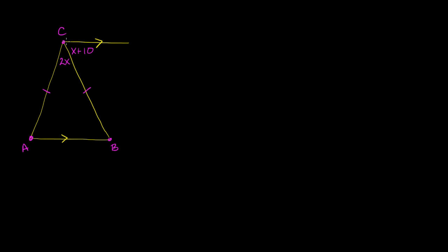They also tell us that this line up here — let me put another label there just for fun. You could even call this a ray because it's starting at C. That line or ray CD is parallel to segment AB over here. They give us these two adjacent angles in terms of x, and what I want to do is figure out what x is.